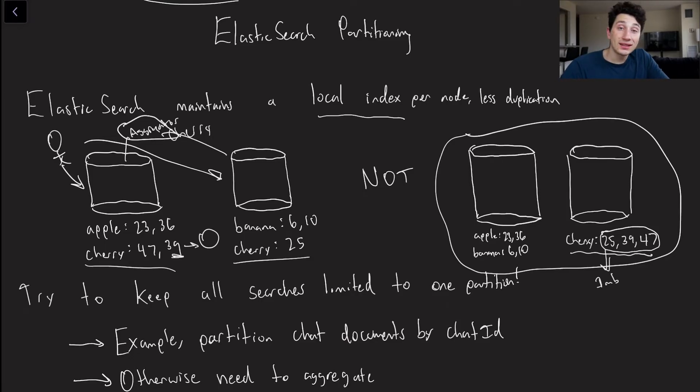And so in reality when we're using Elasticsearch, if possible, it isn't always, we would like to keep all of our searches limited to just one partition at a time. So what's an example of this? Let's imagine I ran a chat app like Facebook Messenger and we want to be able to search through one chat at a time. Well obviously if every single message is a document, we want to keep all of our documents in the same chat on the same node because the whole point is that we are going to be partitioning those by chat ID because we can only search the messages of one chat at a time.